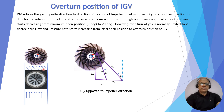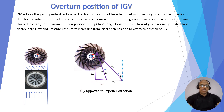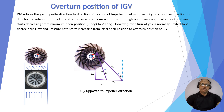You can see the velocity triangle for the overturned position: C1, U1, and V1. It has two components — CA1 in the axial direction and CW1 in the counter-rotation direction. The C1 position is opposite to the impeller rotation direction in the case of the overturned position of IGV.